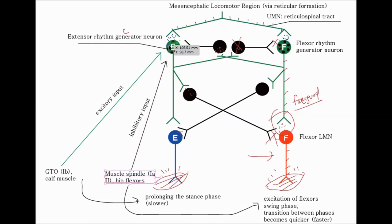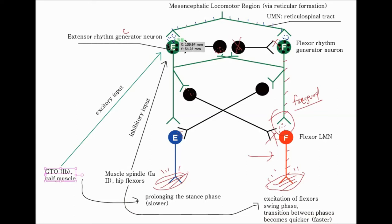The muscle spindle, by exciting the flexors, can make gait faster. For the GTO, by exciting the extensors, it prolongs the stance phase and makes gait slower.